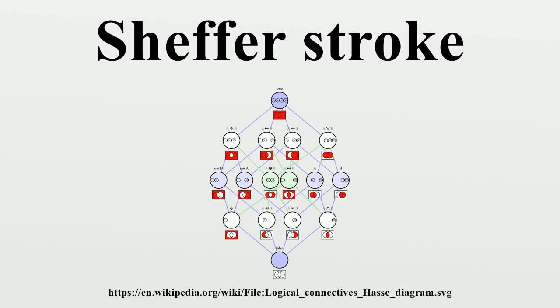History: The stroke is named after Henry M. Schaeffer, who in 1913 published a paper in the Transactions of the American Mathematical Society providing an axiomatization of Boolean algebras using the stroke.